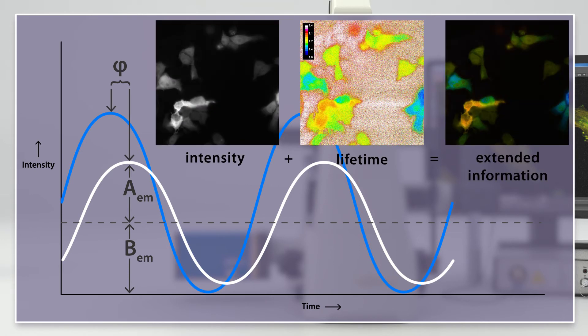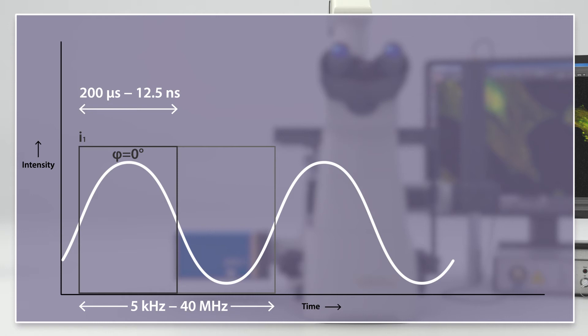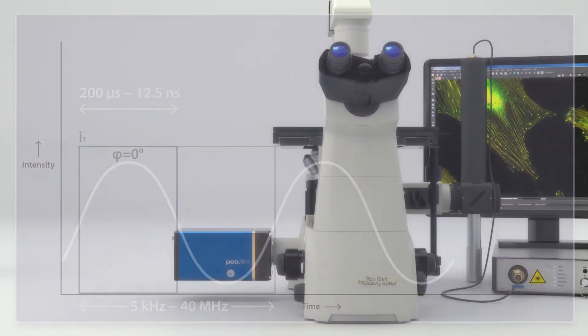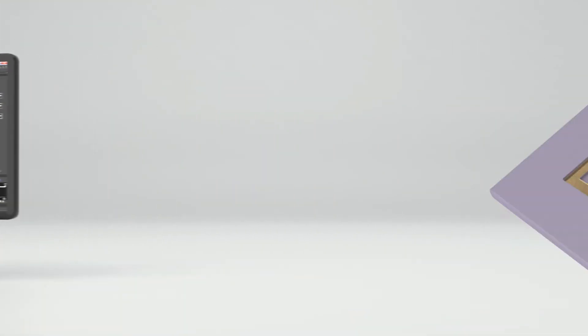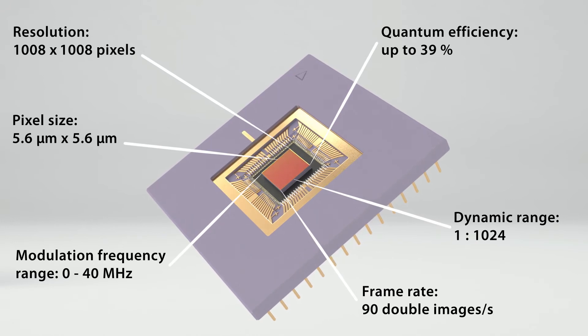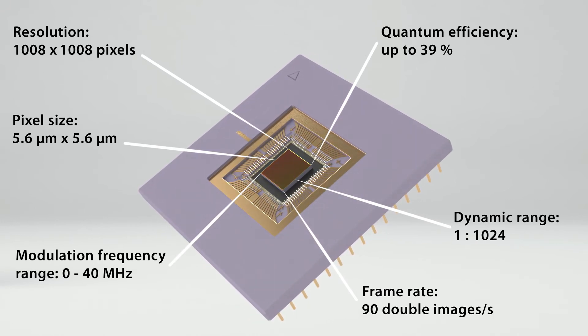These lifetime images extend the information obtained by common intensity images. The reconstruction of the emission signal by means of half-wave integration requires a fast modulatable image sensor. This is where the modulatable high-frequency sensor QMFLIM2 comes into play.